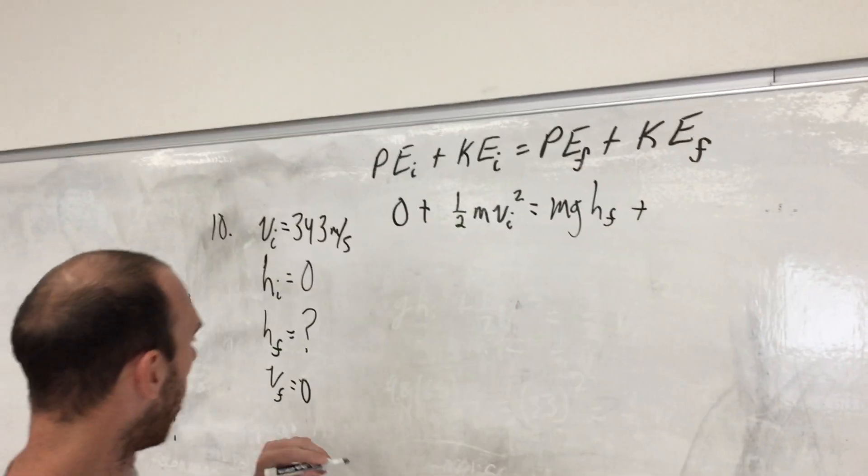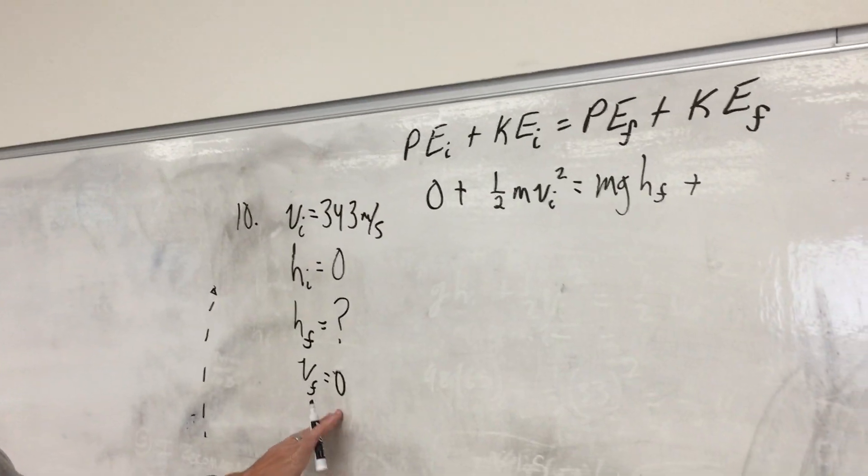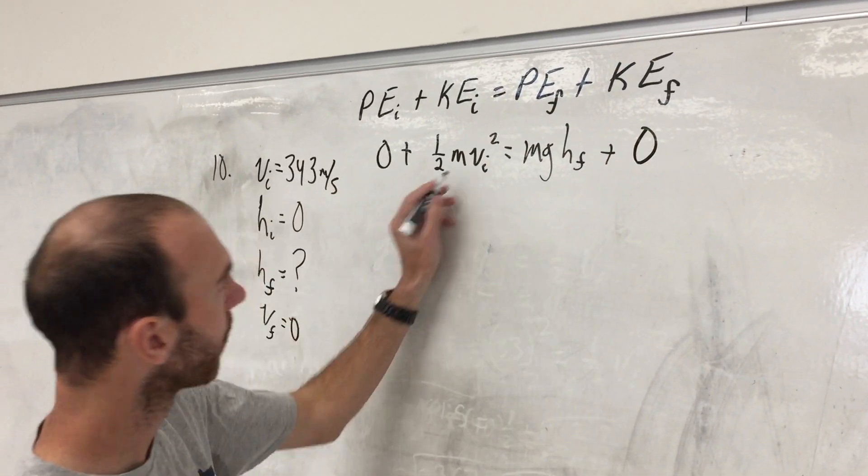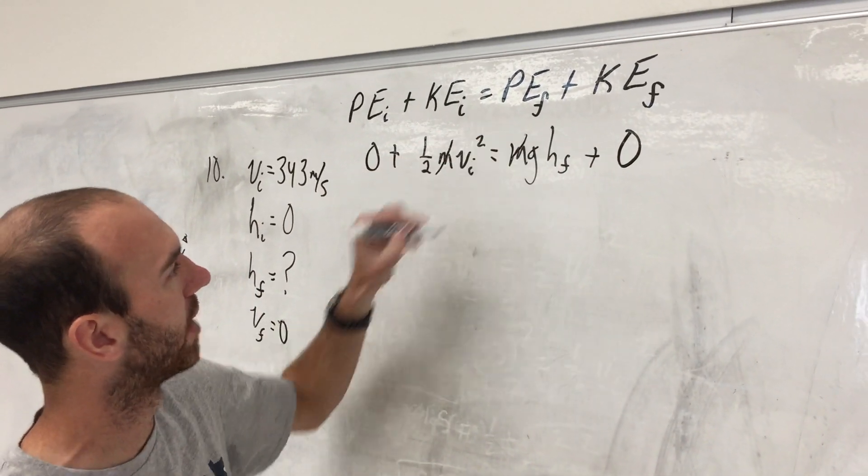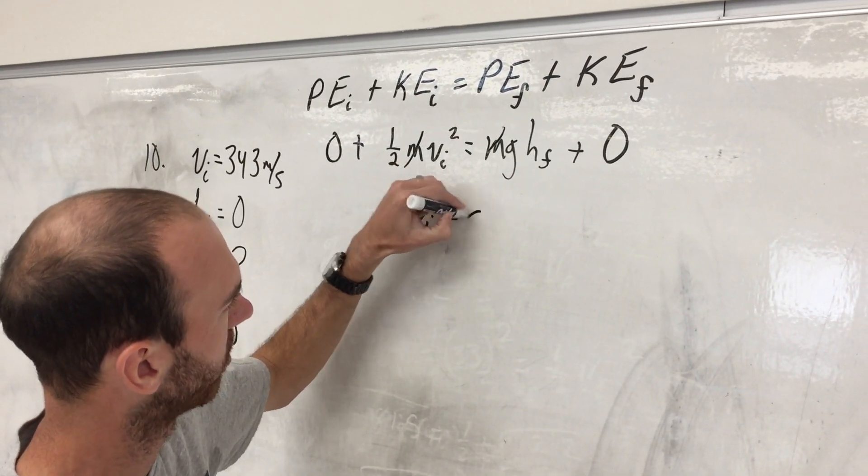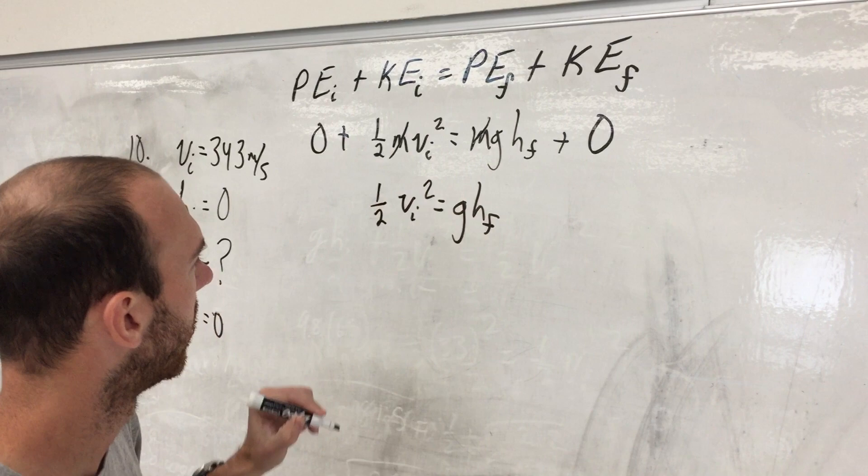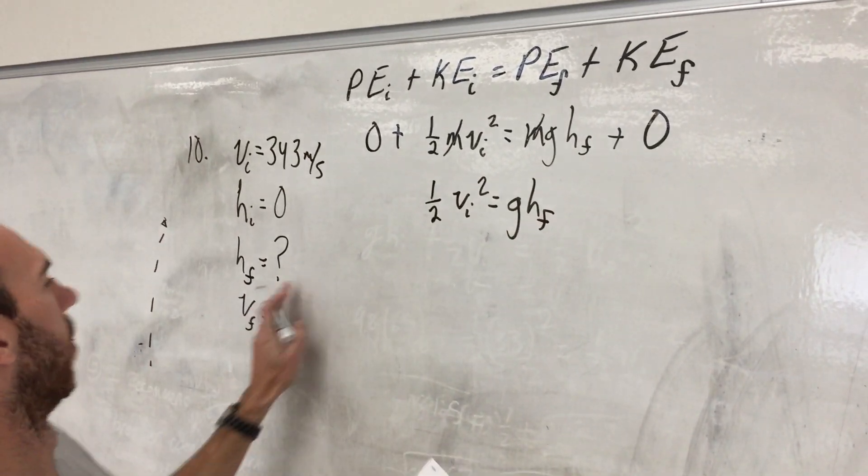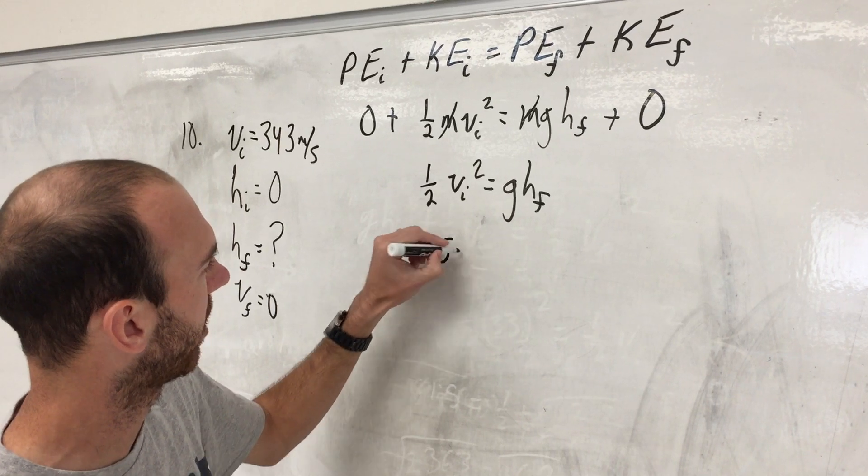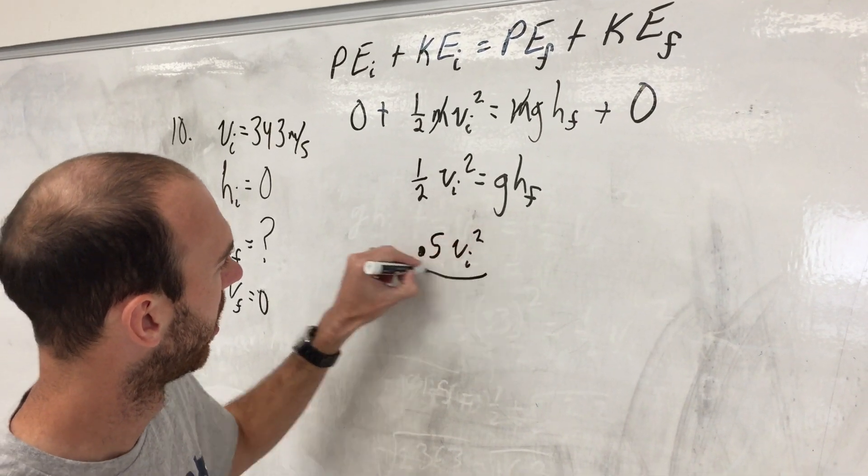Our final kinetic energy though is zero because our rocket is not moving at the top. As always, our masses cancel here, so we have one half the initial velocity squared equaling g h final.